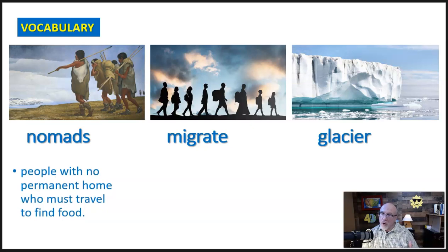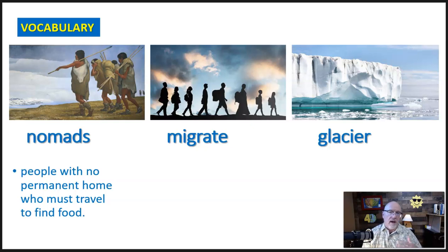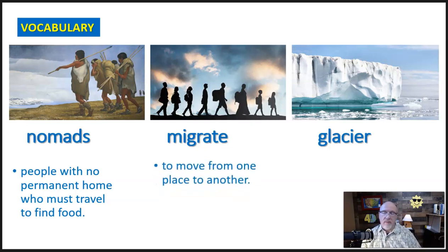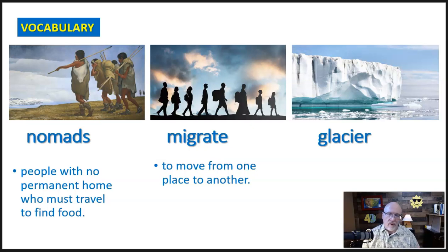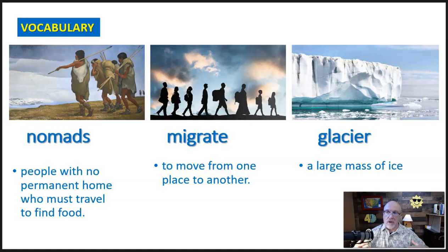So first, nomads are people with no permanent home and they're often traveling, searching for food. They don't live in one place but go after their food, so they're always on the move. Migrate means to move from one place to another. And the third word is glacier, which means a large mass or a large area of ice.